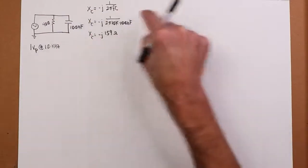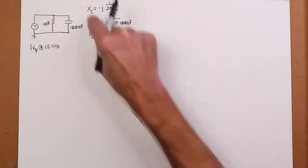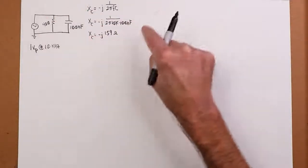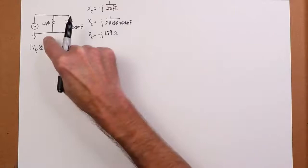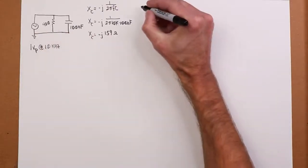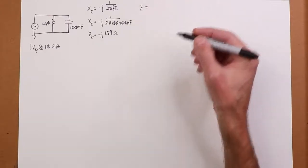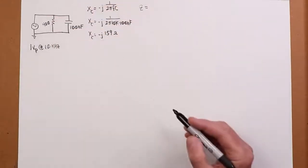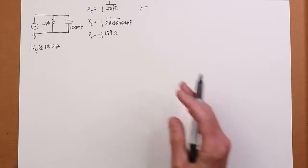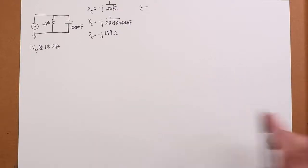Another approach would be to grab the total impedance Z and then find the source current. And then we could do a current divider. So let's find out what Z is.